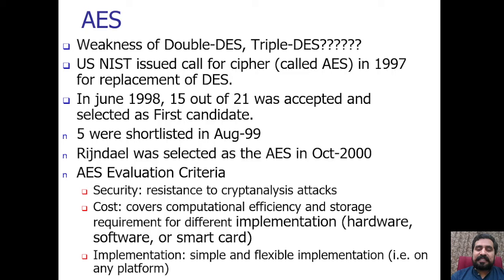After the second AES Candidate Conference, NIST announced that 5 out of 15 candidates — including Mars, RC6, Rijndael, Serpent, and Twofish — were selected as the finalists. After the third AES Candidate Conference, NIST announced that Rijndael, named after its two Belgian scientists — Joan Daemen and Vincent Rijmen — was selected as the Advanced Encryption Standard in October 2000.